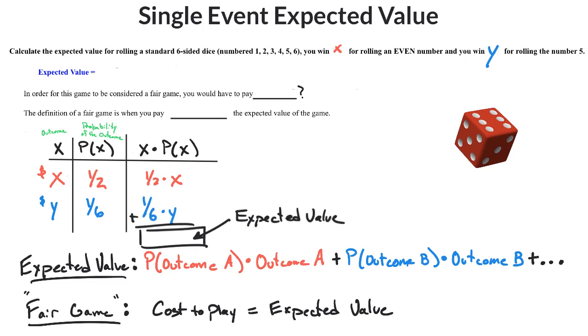An expected value is essentially what's going to happen on average if you were to play this game a whole bunch of times. The expected value is not what you expect to get. It's not the most likely value. It's what's going to happen on average if you play a whole bunch of times.